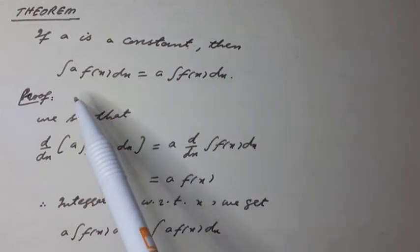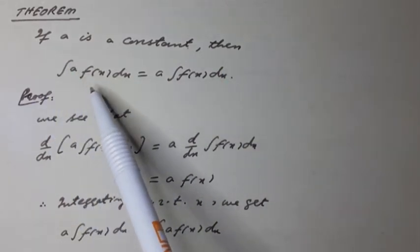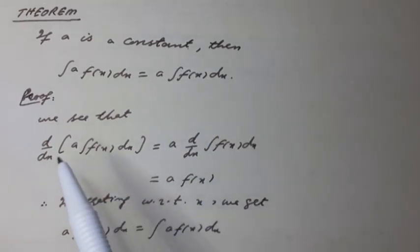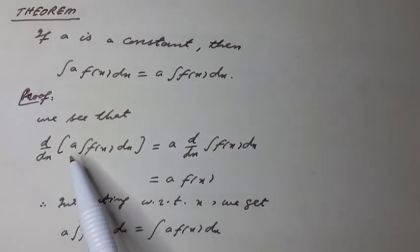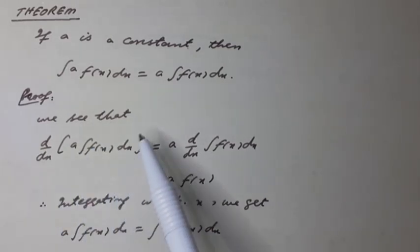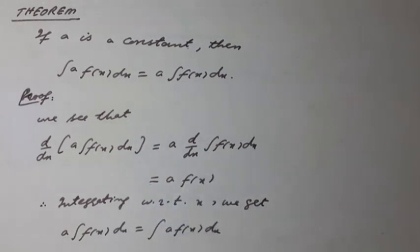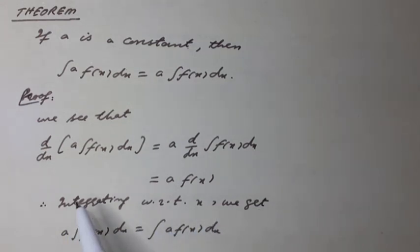Theorem: If a is a constant, then ∫a·f(x)dx is equal to a·∫f(x)dx. The derivative of ∫a·f(x)dx is equal to a times the derivative of ∫f(x)dx, which can be written as equal to a·f(x) using the previous theorem. Therefore, integrating with respect to x, we get a·∫f(x)dx equal to ∫a·f(x)dx.